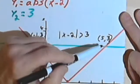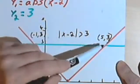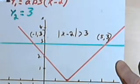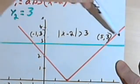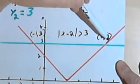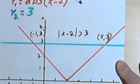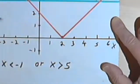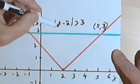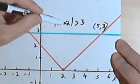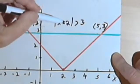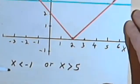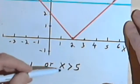Now there's going to be another place I have to look — past the point where the ordered pair is 5 comma 3, because over there my absolute value v is also higher than the y equals 3 line. So any place where x is greater than 5 is also going to be a valid answer. Let's try that out: if I put in positive 7, then 7 minus 2 is 5, the absolute value of 5 is 5, and 5 is greater than 3. So the answer is going to be x is less than negative 1, or x is greater than 5.